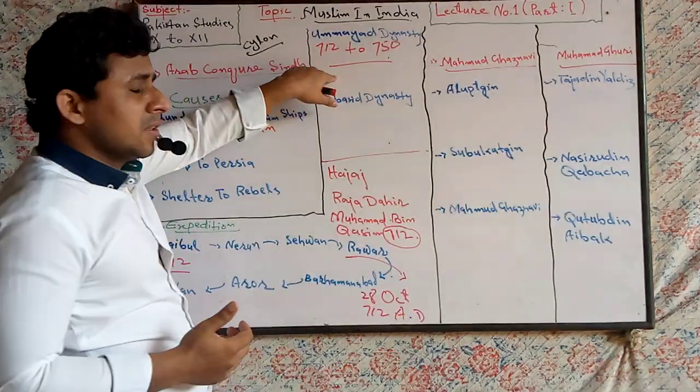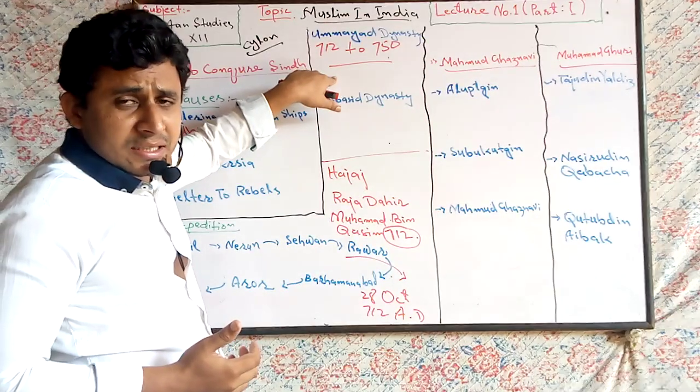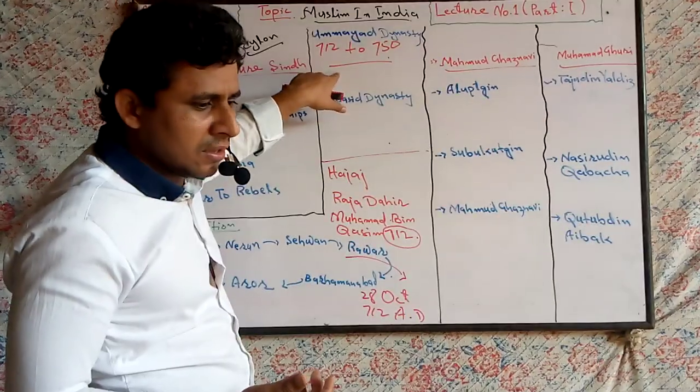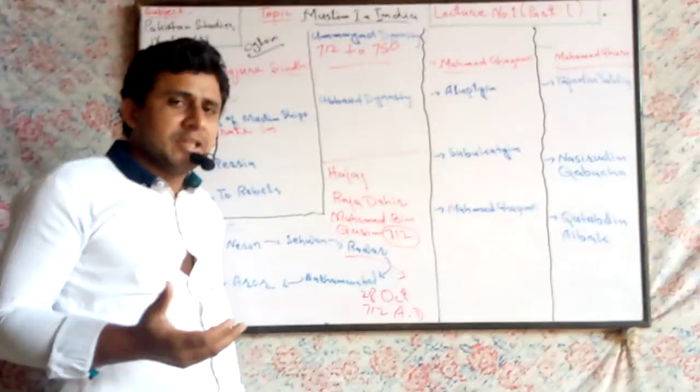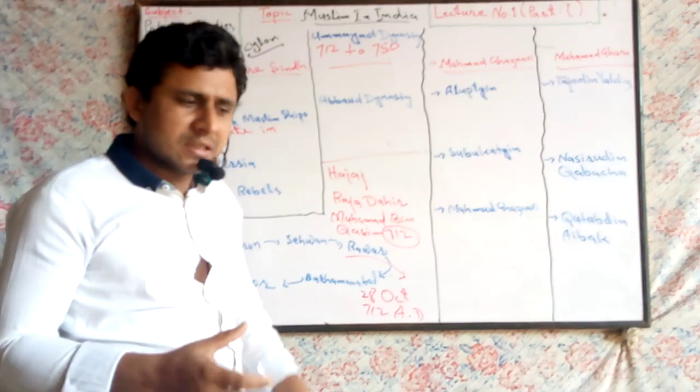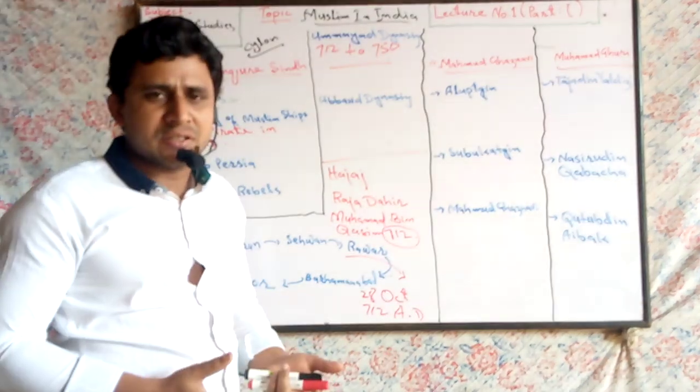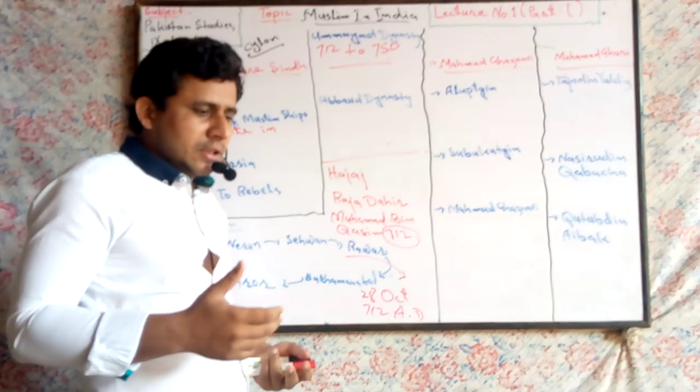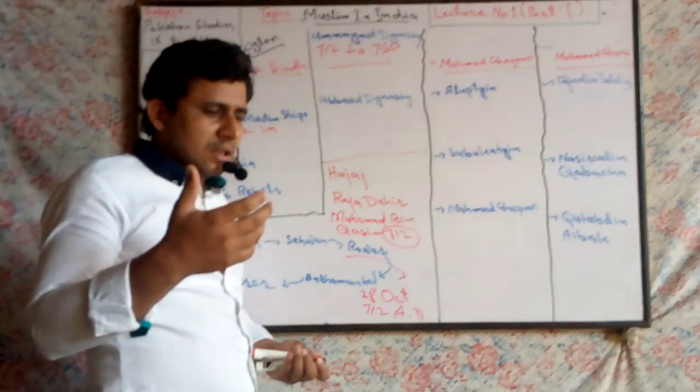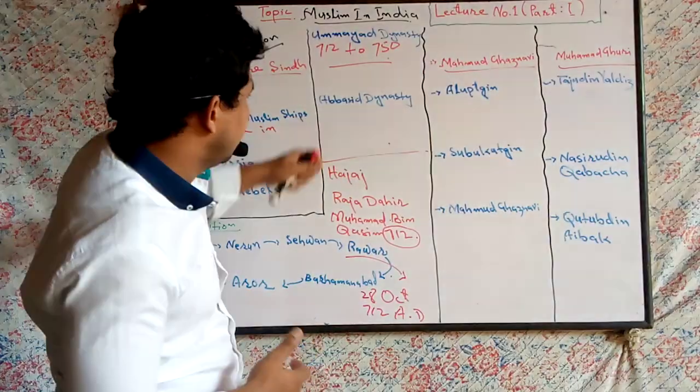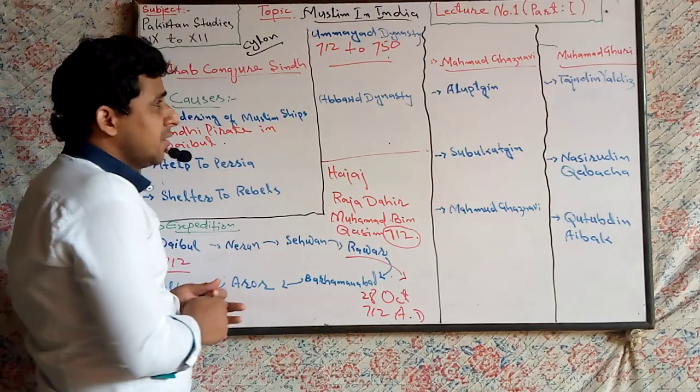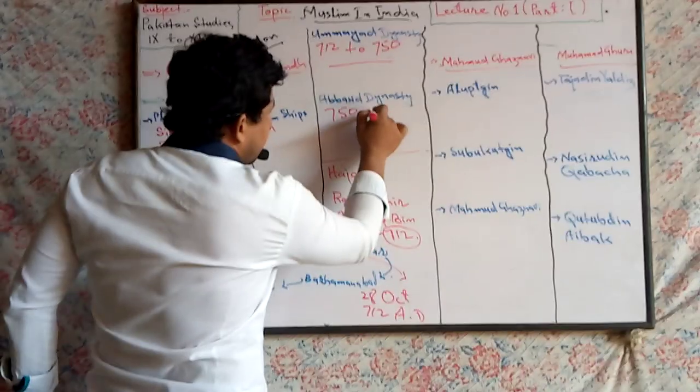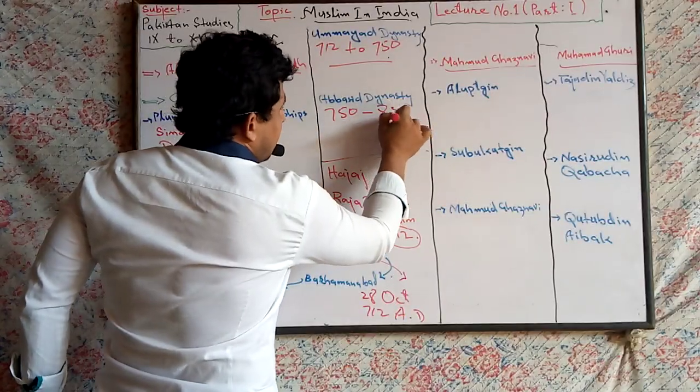When Muhammad bin Qasim conquered Sindh, at that time Umayyad Dynasty was the Islamic Sultan Khilafat. So there were nine governors changed because Muhammad bin Qasim was not a ruler, he was a governor. When he conquered Sindh, he was appointed as a governor in Sindh, but he was asked to come back. And Abbasid Dynasty from 750 to 855.